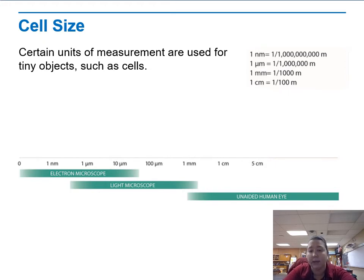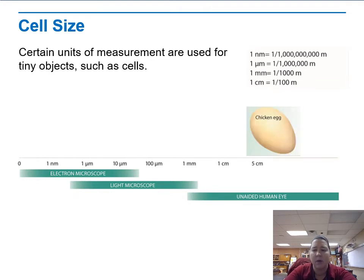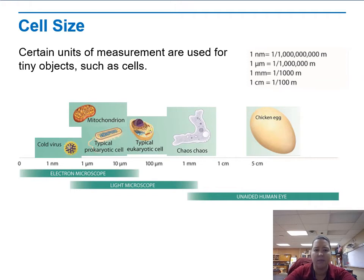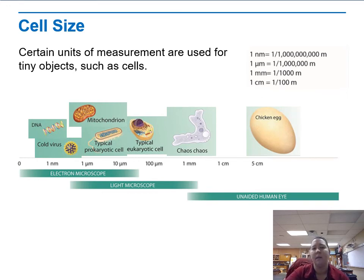Cells are small — that's what it boils down to, and that's why we need to use the microscope. You can see here the overlap between the light microscope and the electron microscope, and between the light microscope and the unaided eye. We can see an egg with the naked eye, but we really can't see a single cell without a microscope. It gets even harder to see bacterial cells and organelles. Viruses, DNA — we can see a very long strand of DNA if prepared properly, but it's very hard to see the whole thing in depth.